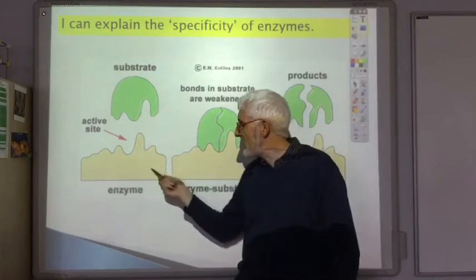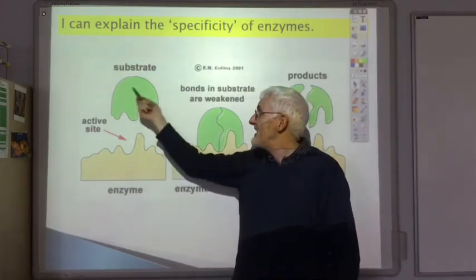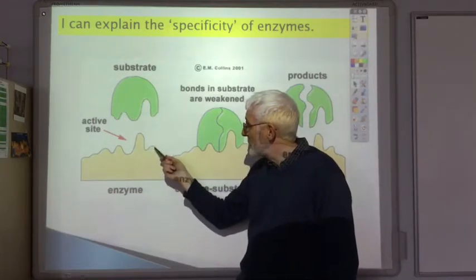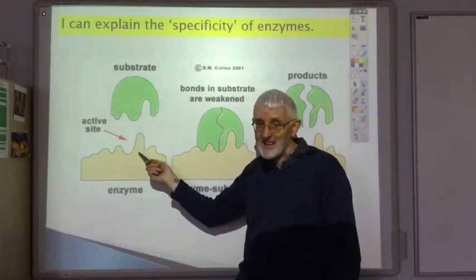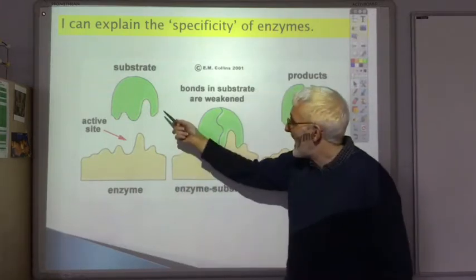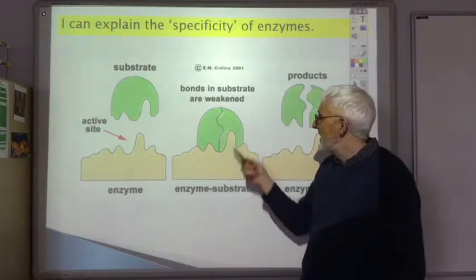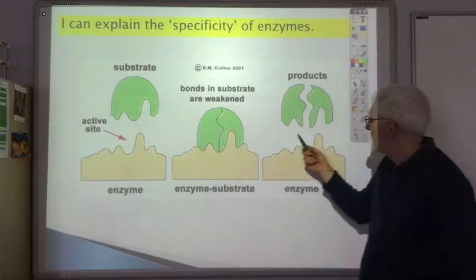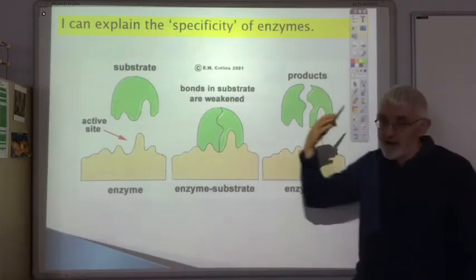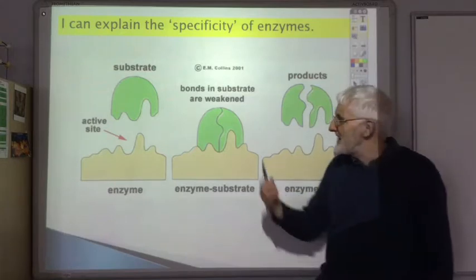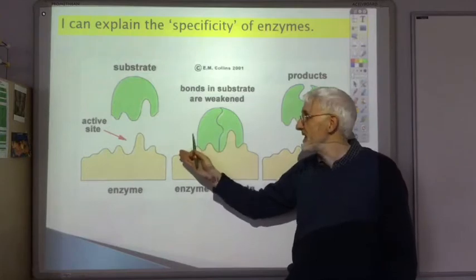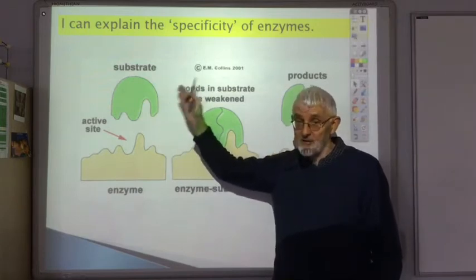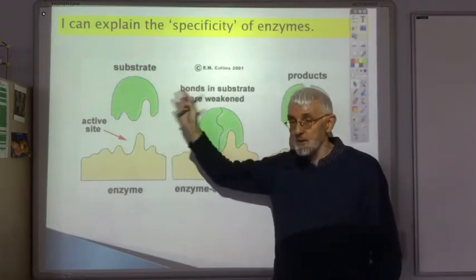Imagine this is our enzyme — let's say it's amylase — and this is our starch molecule. The shape of the starch molecule matches the shape of what's called the active site of the enzyme, so it fits into it like a lock and key. Once it fits in, it speeds up the hydrolysis of the starch, and then the products leave the active site, leaving it free for another starch molecule. It's the shape of the enzyme that makes it specific — that shape only fits one particular molecule.